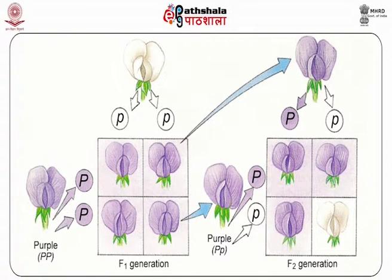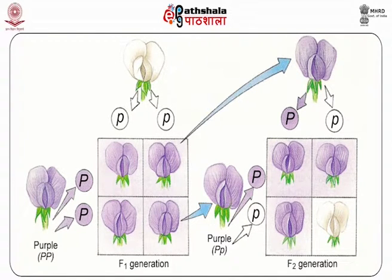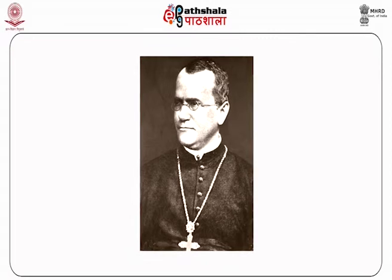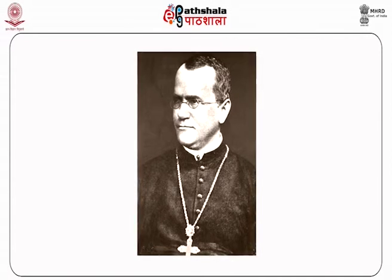Mendel discovered that when he crossed pure-breed white flower and purple flower pea plants — the parental or P generation — the result was not a blend. Rather than being a mix of the two, the offspring known as the F1 generation were purple-flowered. When Mendel self-fertilized the F1 generation pea plants, he obtained a purple flower to white flower ratio in the F2 generation of 3 to 1. He then conceived the idea of heredity units, which he called factors.